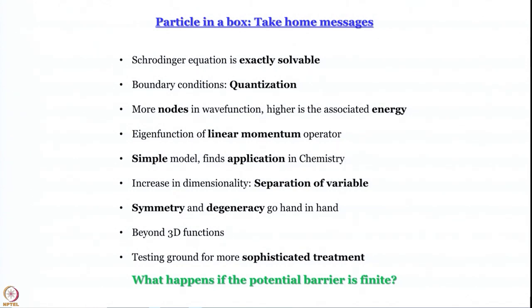Symmetry and degeneracy go hand in hand — a lesson that goes a long way in understanding systems like d orbitals that are degenerate in a bare metal ion but get classified into two groups in tetrahedral or octahedral field, and split further upon Jahn-Teller distortion. We are going from a more symmetric to a less symmetric system progressively, and that leads to decrease in degeneracy, as seen when moving from a square box to a rectangular box.